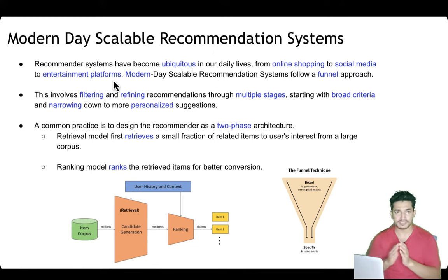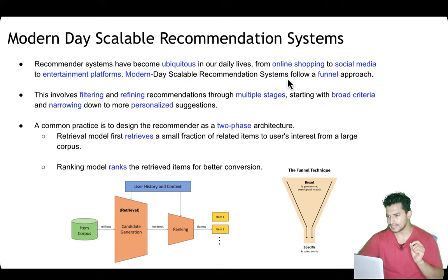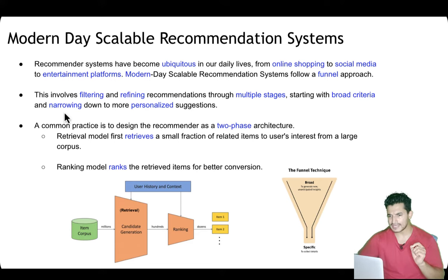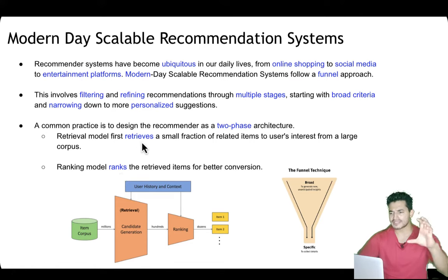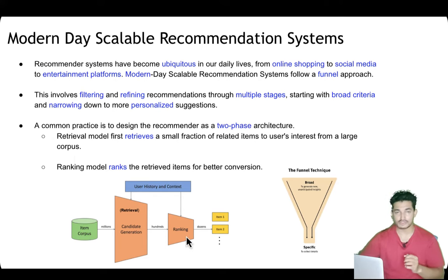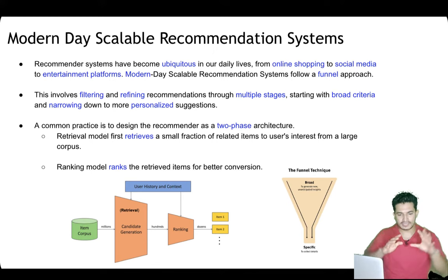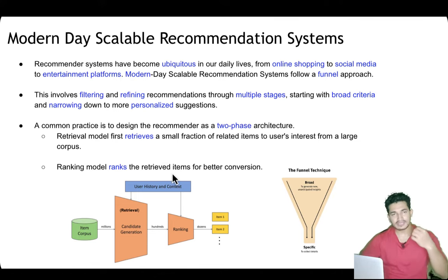Modern-day recommendation systems have become ubiquitous in our daily lives — from online shopping to social media to entertainment platforms, like buying from Amazon, browsing Instagram, or watching Netflix. Modern scalable recommendation systems follow a funnel approach, filtering and refining recommendations through multiple stages, starting broad and narrowing to personalized suggestions. The common practice is a two-phase architecture: a retrieval phase and a ranking phase.